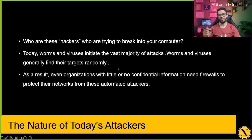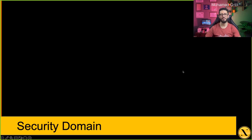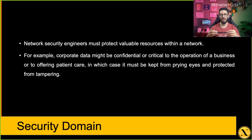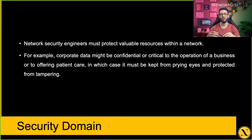As a result, organizations need to protect their confidential data. They need a firewall to secure access to their network — that's how we protect ourselves from automated attacks. Network security engineers must protect valuable assets and resources within the network, which can be anything confidential or critical to corporate information: healthcare, patient data, databases, or anything else, without being tampered or altered, and to deal with data breaches.